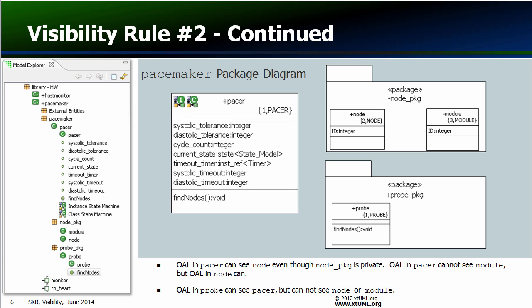For the purposes of this example, I have modified a screenshot of the tool to show the internals of the NodePKG and ProbePKG packages — the internals of packages are not actually shown like this inside the tool. Here we see rule number two in action. Since NodePKG is a peer of the Pacer class, NodePKG is always visible to Pacer even though it is marked as private. This means that OAL in Pacer's find nodes operation will search inside NodePKG when looking for named elements. Then the individual visibility of the elements inside NodePKG comes into play — OAL in Pacer can see the Node class, but it cannot see the Module class, because Module is marked private.